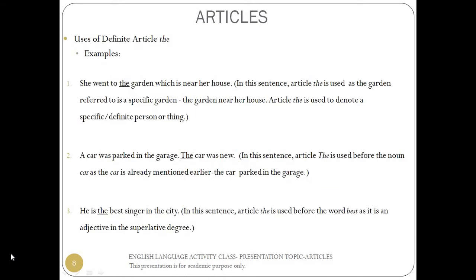Uses of definite article the — examples. 'She went to the garden which is near her house.' In this sentence, article the is used as the garden referred to is a specific garden, i.e. the garden near her house. Article the is used to denote a specific or definite person or thing. 'A car was parked in the garage. The car was near.' Article the is used before the noun car as the car is already mentioned earlier. 'He is the best singer in the city.' Article the is used before the word best as it is an adjective in the superlative degree.